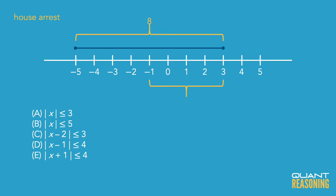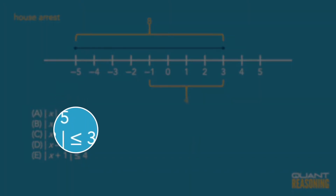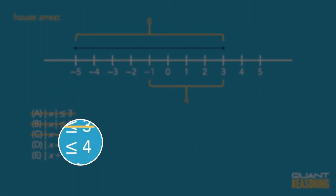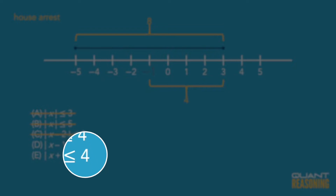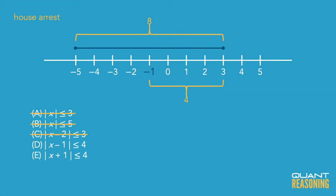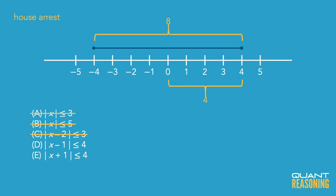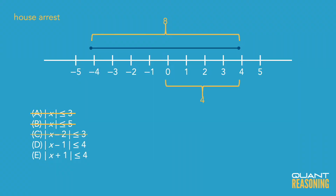We'd have four on either side of zero in the house arrest scenario. Because the total range of the shaded part is eight, we can eliminate answer choices a, b, and c. Another way to eliminate answer choices is to notice that the center of the shaded part isn't zero, so that eliminates answer choices a and b.